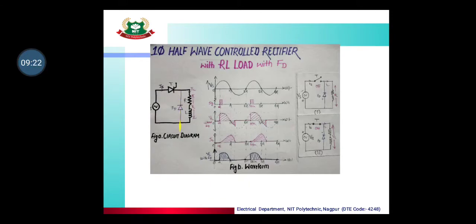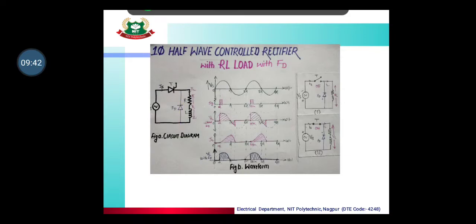A freewheeling diode is nothing but a simple diode which is connected across the inductive load, as shown in the figure. Here, a diode — the freewheeling diode — is connected across the inductive load.